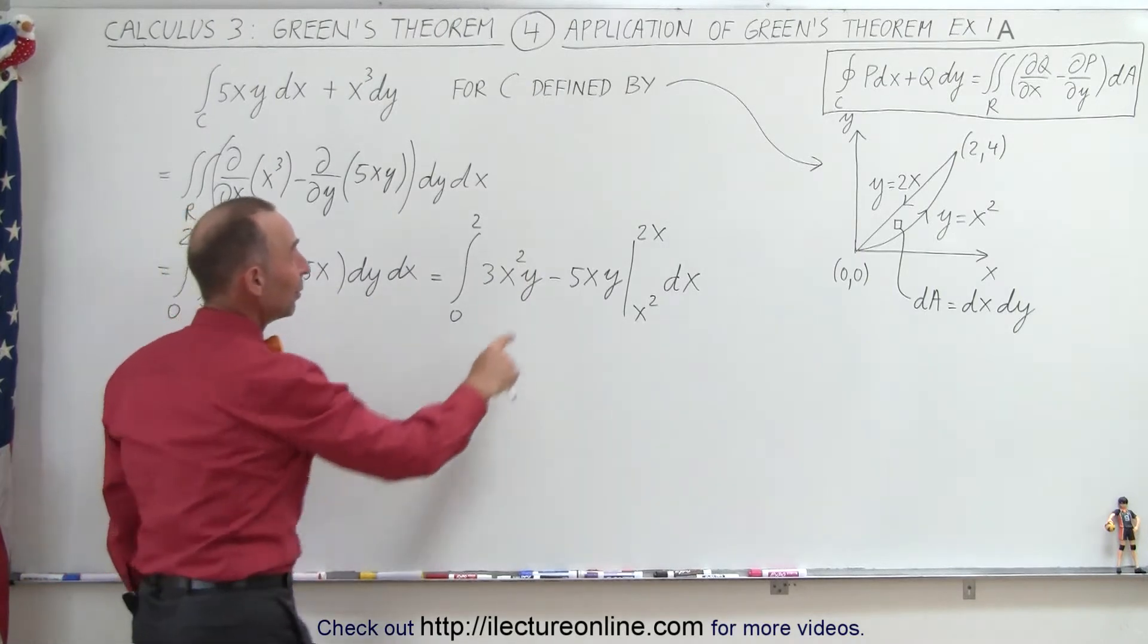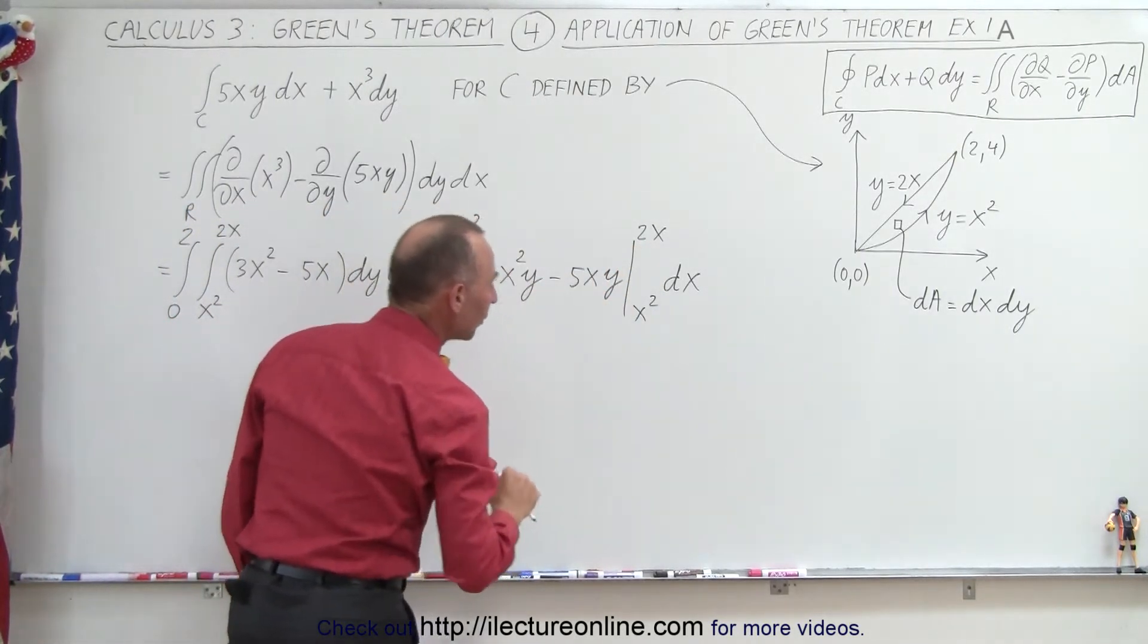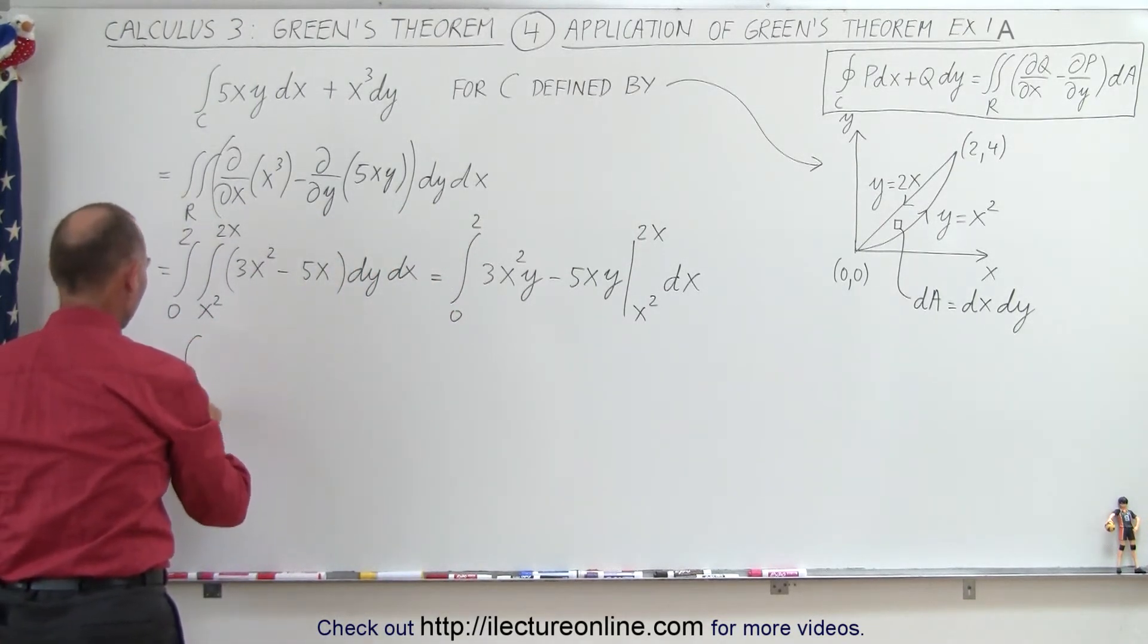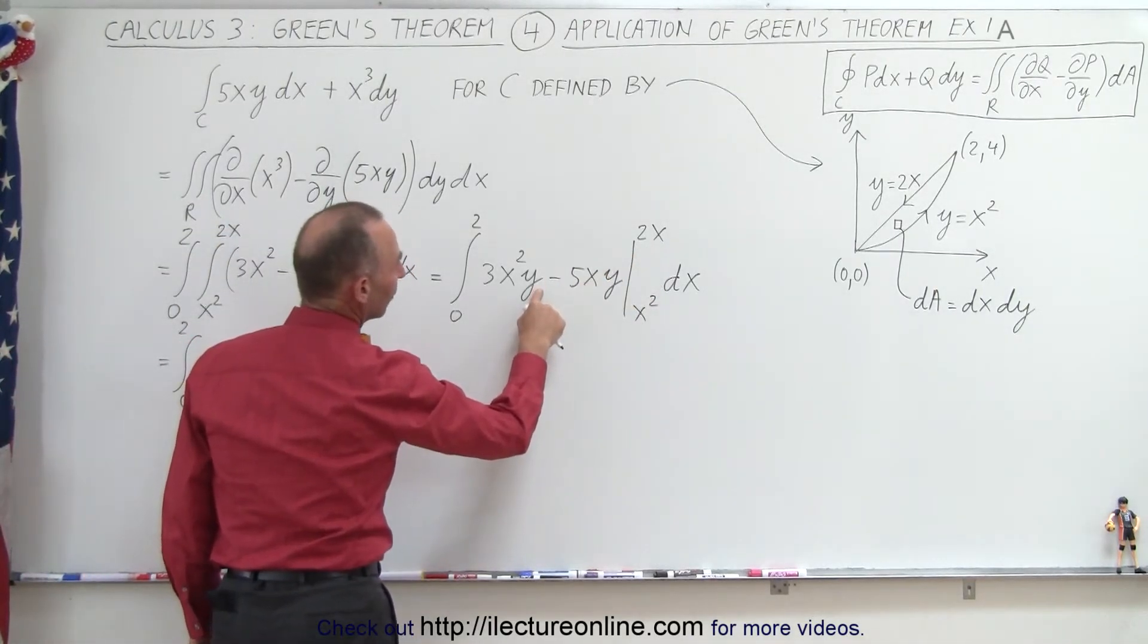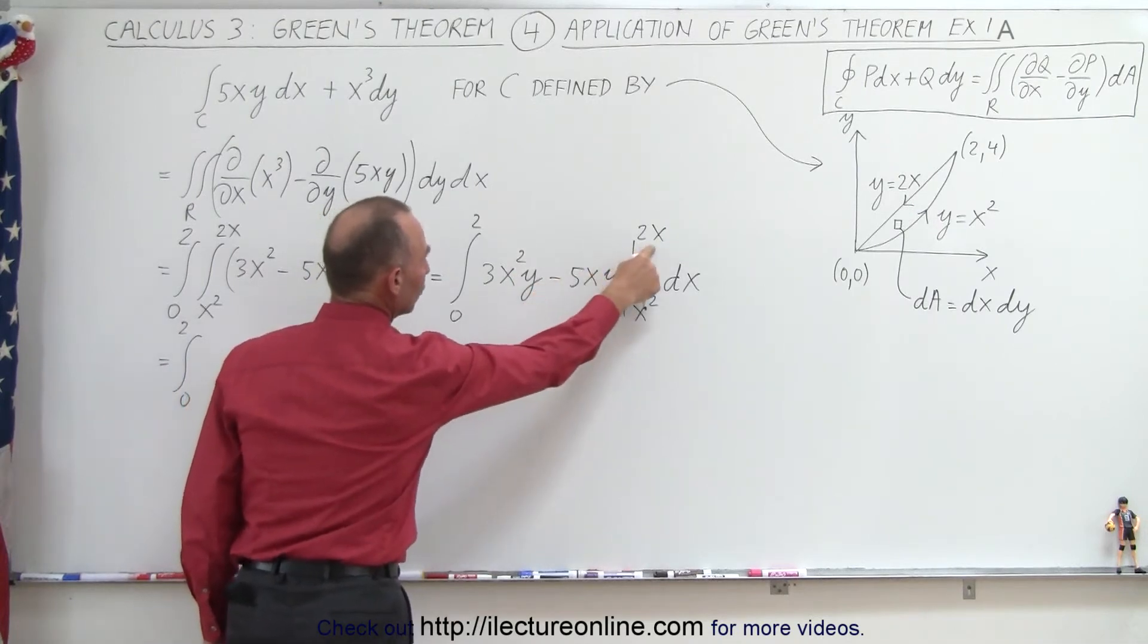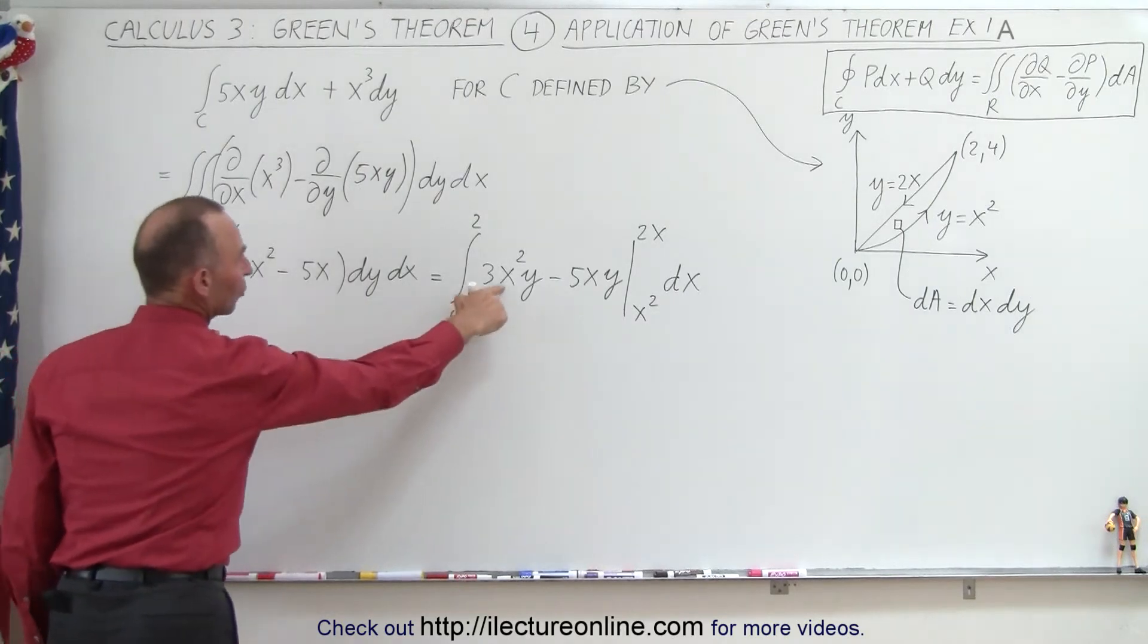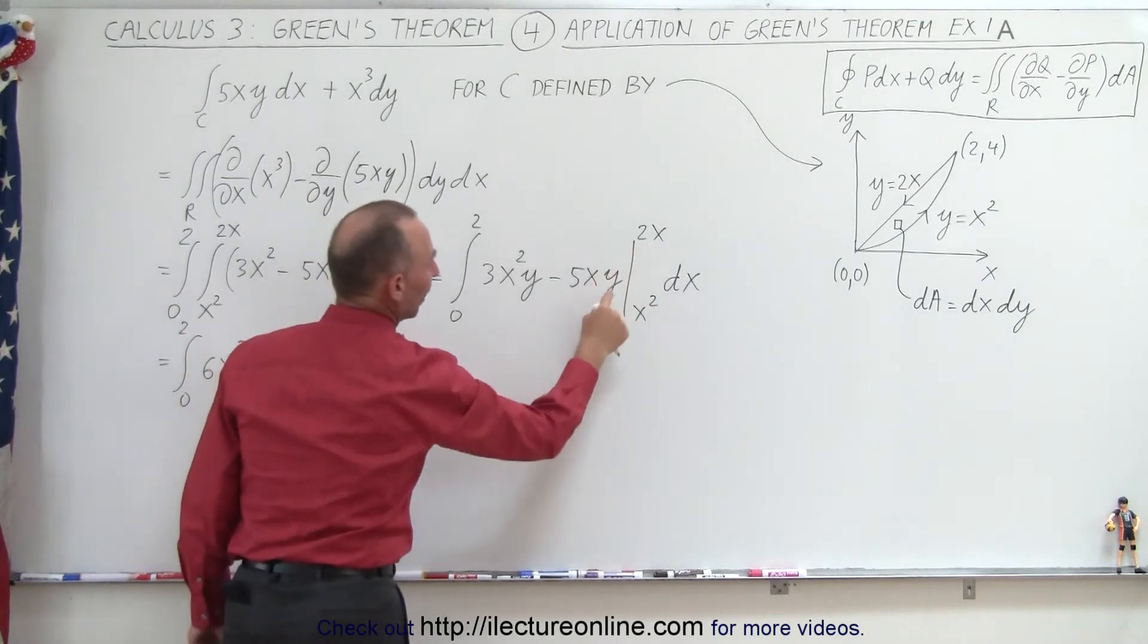So now we can replace every y by the upper and lower limit. And notice we end up probably with four terms here. So this becomes equal to the integral from 0 to 2. Plug in the upper limit instead of y. So we're going to get 6x³, since y is now going to be 2x. So we end up with 6x³. 2 times 3 is 6, and x² times x is x³. Minus, plug in 2x for y, that gives us -10x².